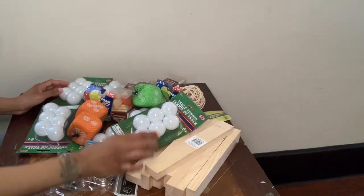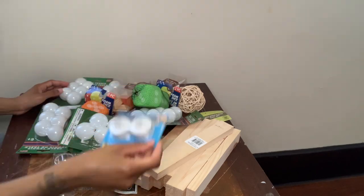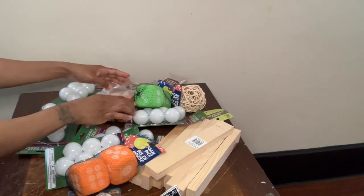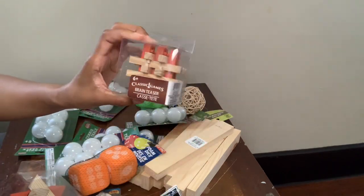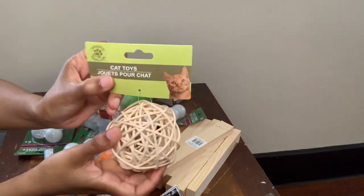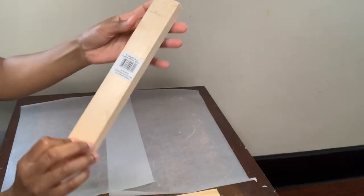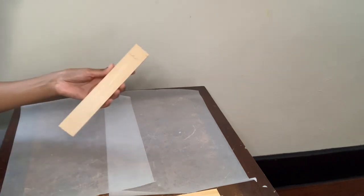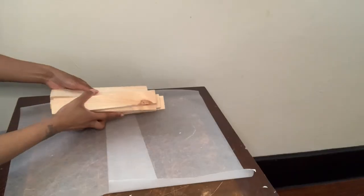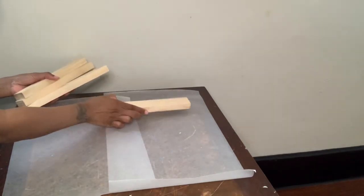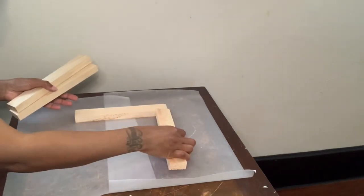These are all the items that I will be working with today and all of these items are from the Dollar Tree. I have a variety of tennis balls, brain teasers, dice, etc. The first thing I'm going to be working with is the wood and I'm just going to start off by peeling the sticker off and then I'm going to glue these in a square shape and I will be using my wood glue to do that.